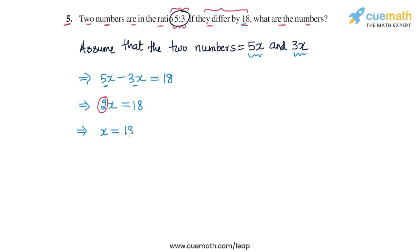So let's divide both sides of the equation by 2. We will get x is equal to 18 by 2. And 18 by 2 is 9. So we will get x is equal to 9.